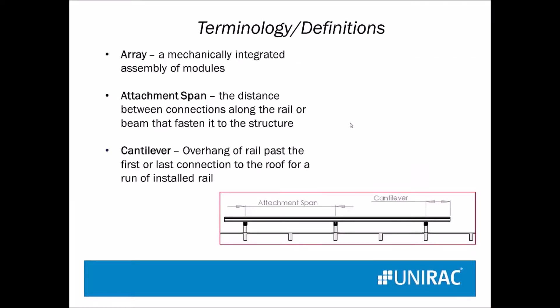An array is officially a mechanically integrated assembly, so that would be one long row that's all mechanically joined together. Array is often also used as a group of modules on one roof — you might have two or three arrays on two or three different roofs on one building.